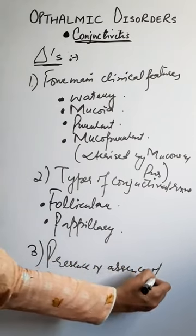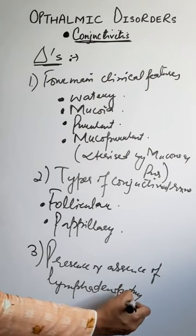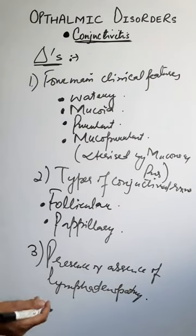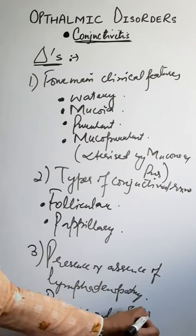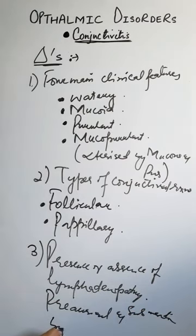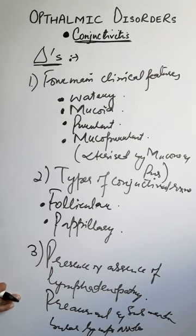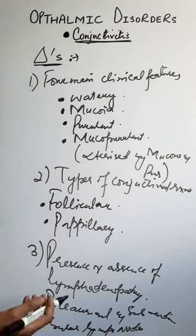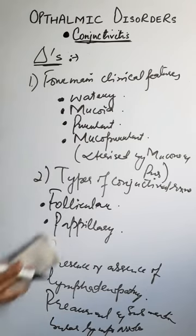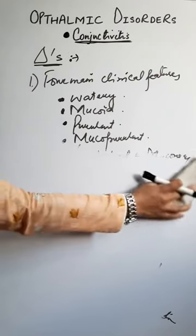Number three is by the presence or absence of lymphadenopathy. We will see the pre-auricular and submandibular lymph nodes — specifically, the enlargement of pre-auricular and submandibular lymph nodes — and through this we can also detect that conjunctivitis is present.